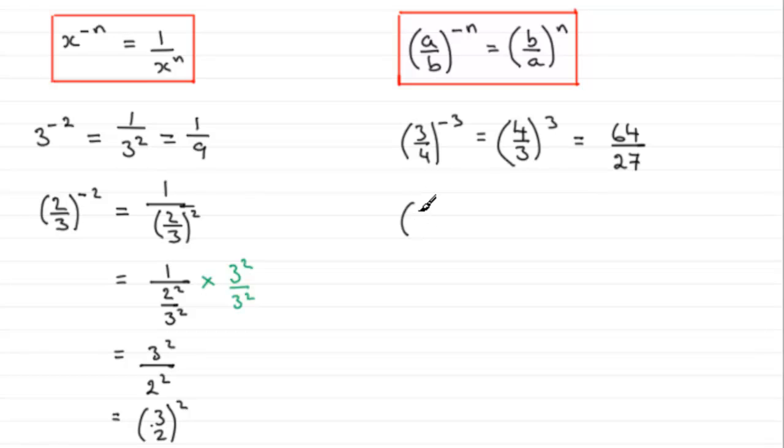Here's another one. We've got 2 fifths this time, but to the power negative 1. What would this one be? Well, if we turn it upside down, it becomes 5 over 2, and then it's going to be to the power 1. But anything to the power 1, it's just going to leave it unchanged. So that's going to be simply 5 over 2.